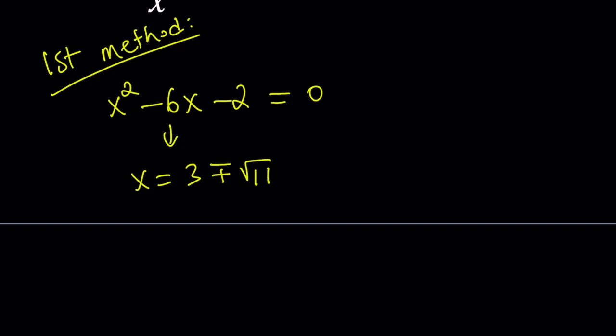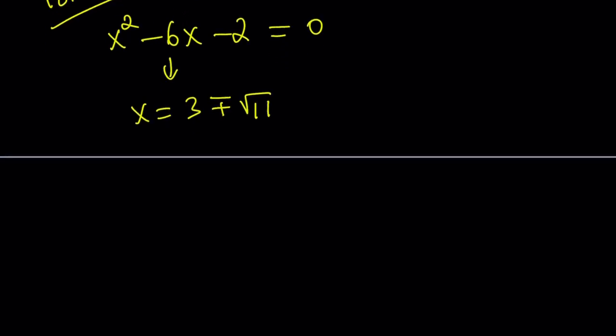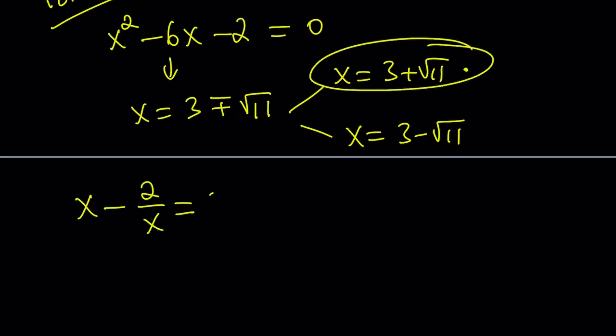Now, we're going to go ahead and plug it in, but there are two solutions: 3 plus root 11 and 3 minus root 11. Let's use the first one. So we're supposed to evaluate x minus 2 over x, replace x with 3 plus root 11.